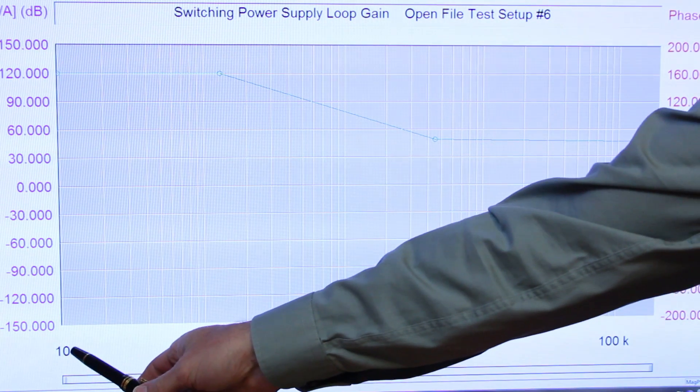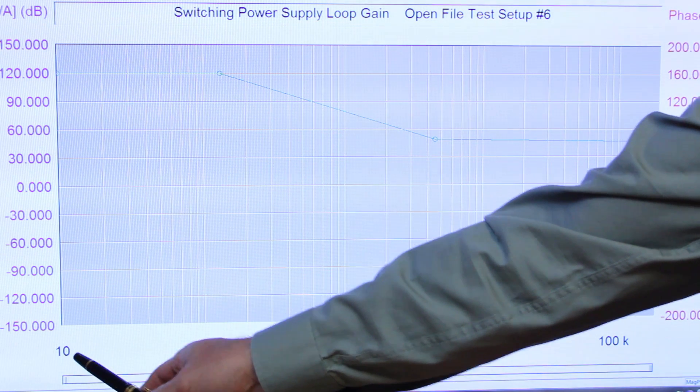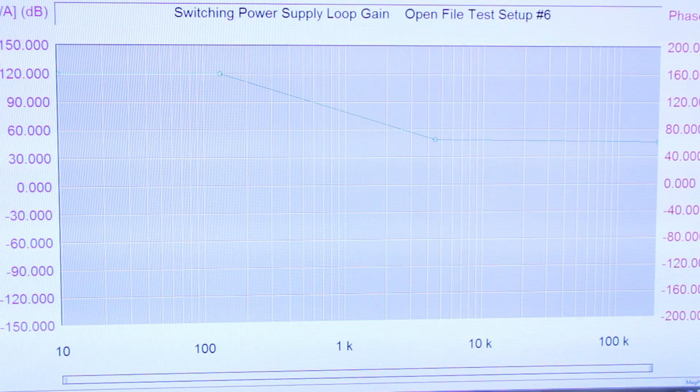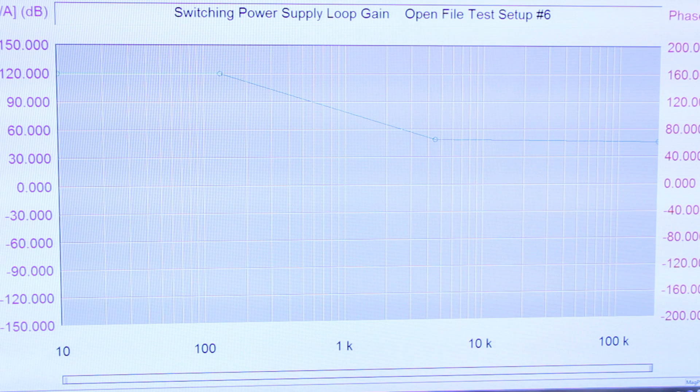Notice we're going to start the sweep at 10 Hertz. The first decade from 10 Hertz to 100 Hertz is very important because that's where you capture the gain at the line frequency 50 Hertz, 60 Hertz, and the harmonics come afterwards.